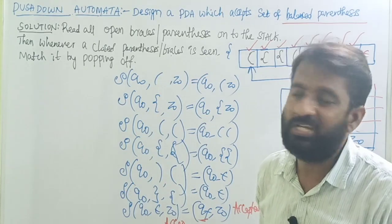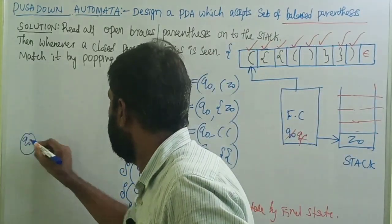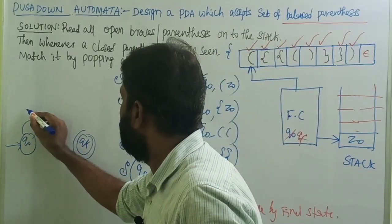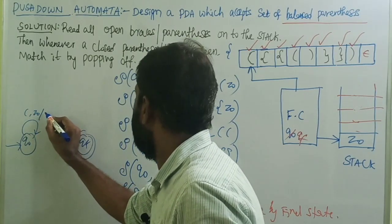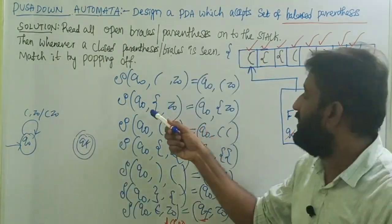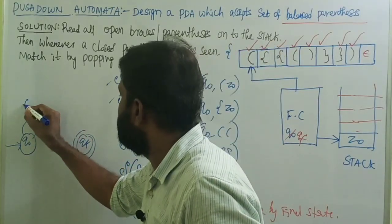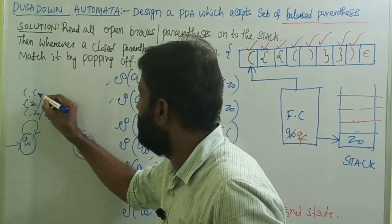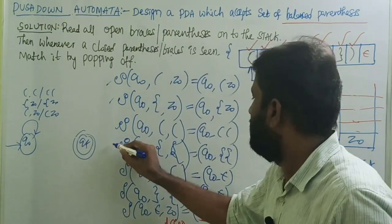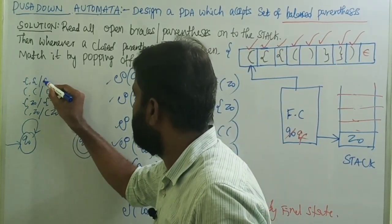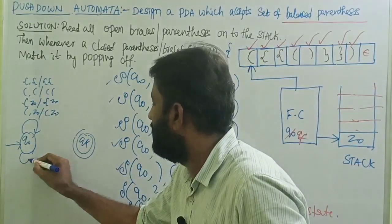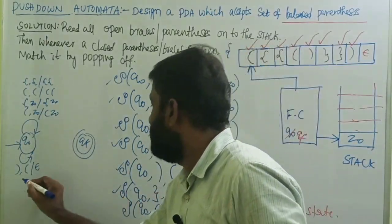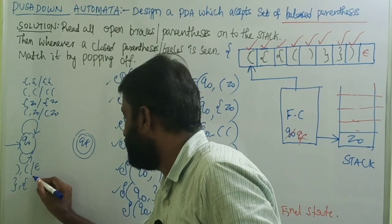Now draw the graphical notation. We have only two states: q0 and qf. Starting state is q0. Self-loop transitions on q0: open brace with z0 on stack — push open brace; open parenthesis with z0 — push open parenthesis; open brace with open brace on stack — push open brace; open parenthesis with open parenthesis — push open parenthesis. If input is closed brace and top is open brace — pop. If input is closed parenthesis and top is open parenthesis — pop.